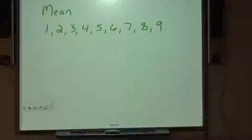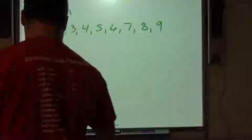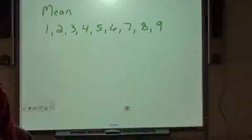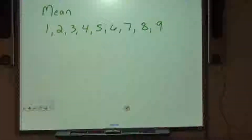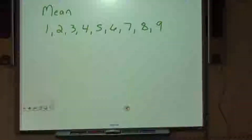Before we start chapter 3, I want to go over mean, median, and mode — different types of averages. The first one is the mean. To find the mean, we add up all of the numbers, and then we divide by the total count of numbers.